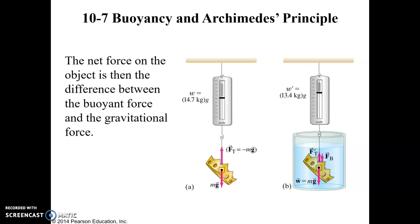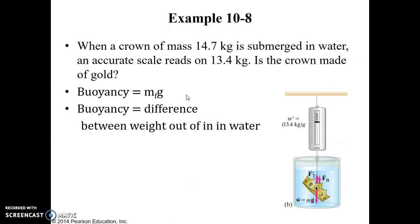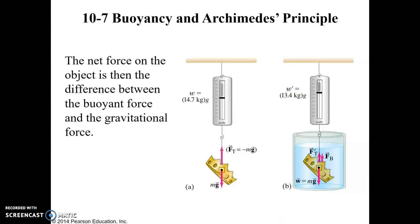And Archimedes came up with the idea of using the crown's buoyancy to measure it. So the basic idea is here, if you were to weigh the scale or weigh the crown using the scale in air, you're going to find that the scale shows that it is 14.7 kilograms. And of course the weight would be 14.7 kilograms times g, but we'll just leave it in terms of the mass times g.